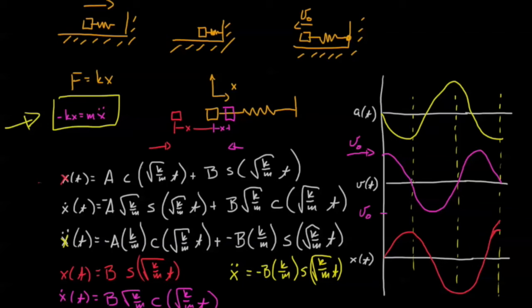Negative x equals x double dot or equals the acceleration. You know, we have some coefficients thrown in there, but the relationship is the same. And in fact, that's what we see.